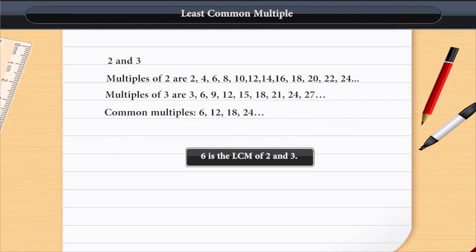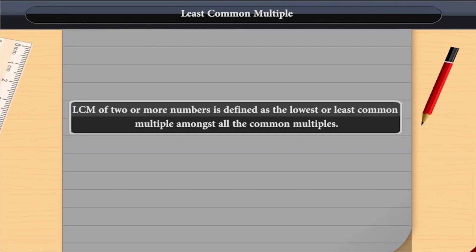What is their Least Common Multiple or LCM? 6 is the LCM, so LCM of 2 and 3 is 6. LCM of 2 or more numbers is defined as the lowest or least common multiple amongst all the common multiples.